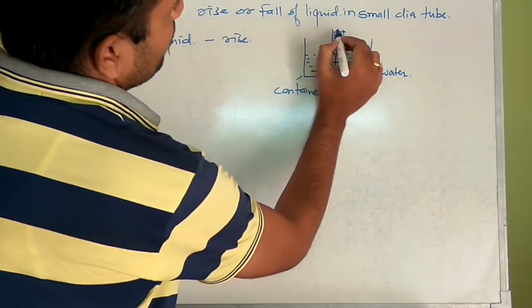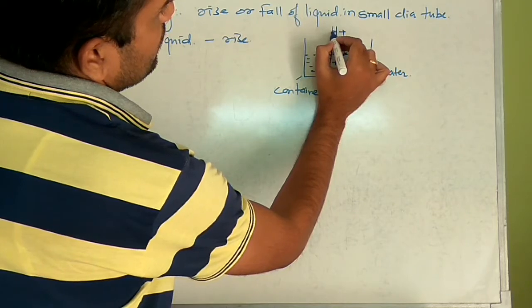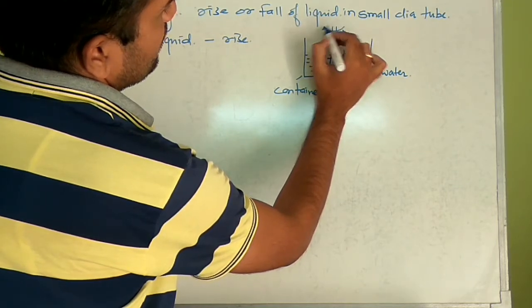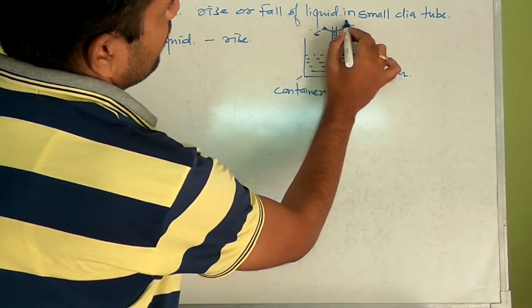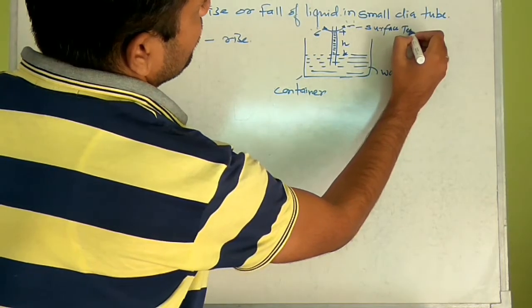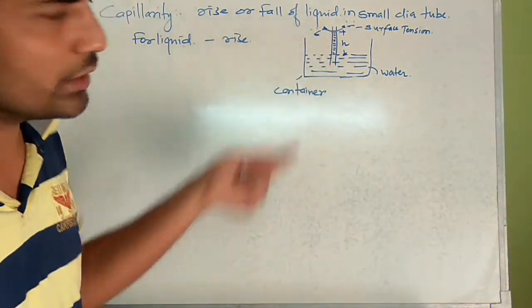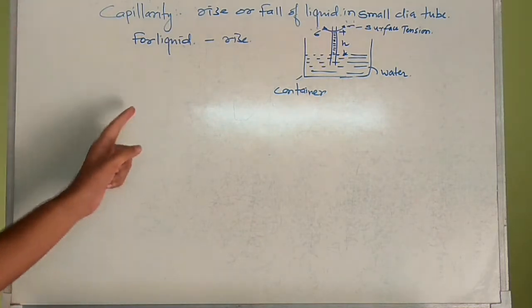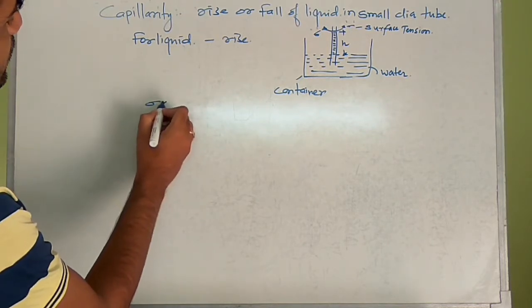Now, what is capillary action? In this case, so many factors are working. If we see the water surface at the height edge, surface tension is acting at the water surface, and we are denoting it by sigma. This is surface tension — now how the water rises in the tube, that we will see.